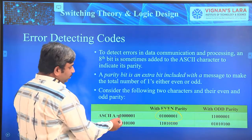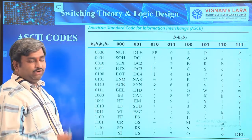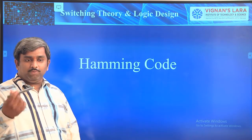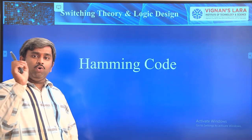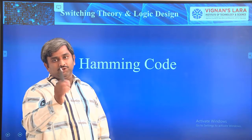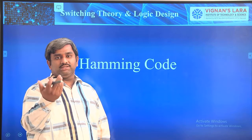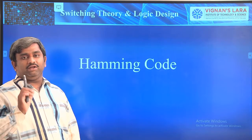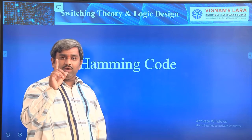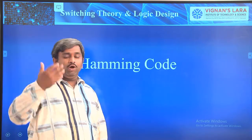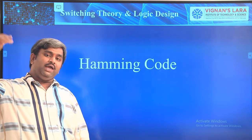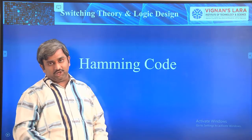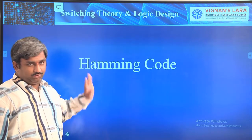In the next class, we will see the Hamming code operation. In the communication system, when you are transmitting data, you have to code with Hamming information. The scientist Hamming proposed this theory, so based on his name it is called Hamming code theory. This Hamming code theory will detect a single-bit error and correct the single-bit information. If you have more than one bit error — two-bit or three-bit error — we use another type of system. In our course, we have only single-bit error detection and correction by using Hamming code. Thank you.